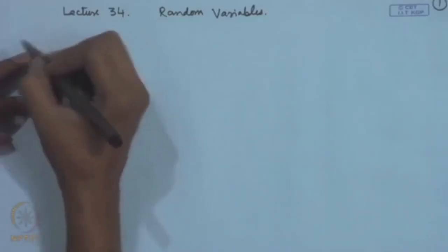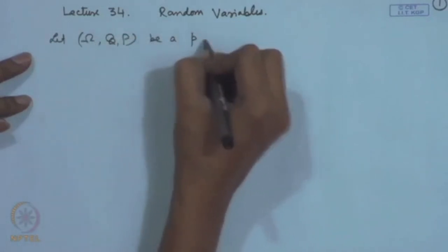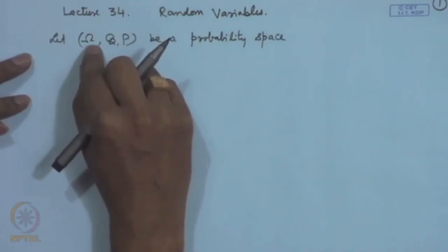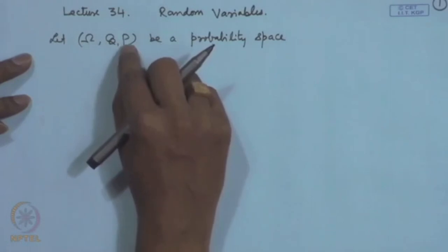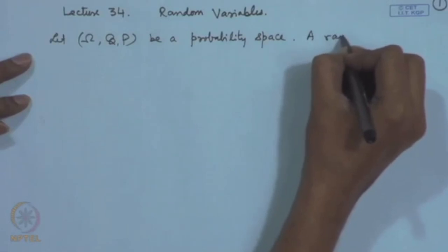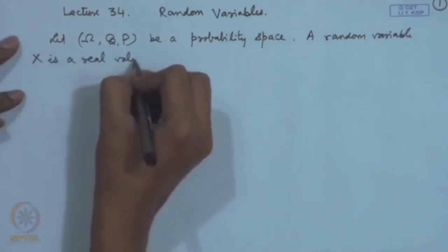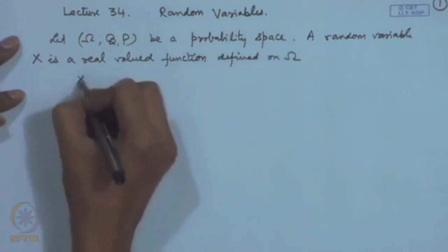Therefore, we use the concept of random variables. In the case of random variables, we associate with each sample point a real number. A random variable is a real-valued function. We start with: let (Ω, B, P) be a probability space. The collection of all possible outcomes is the sample space Ω. Script B denotes a sigma-field of subsets of Ω and P is the probability function defined on that. Then a random variable x is a real-valued function defined on Ω — basically x is a function from Ω into ℝ.